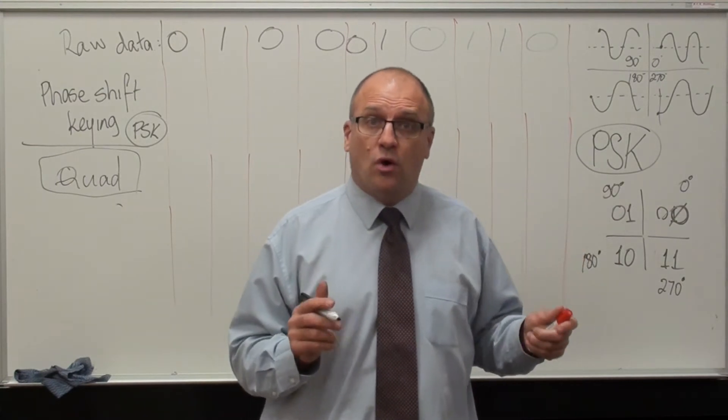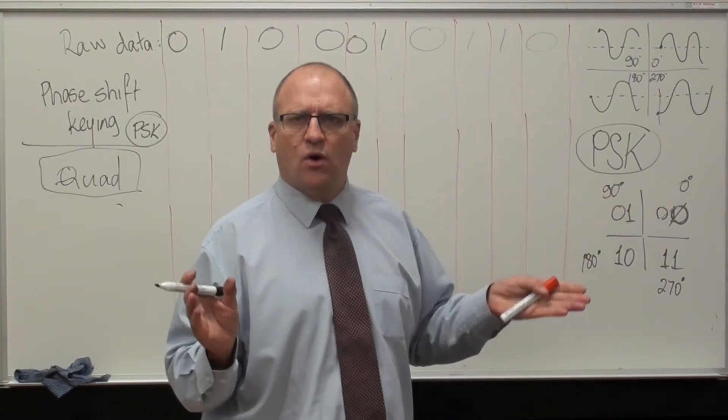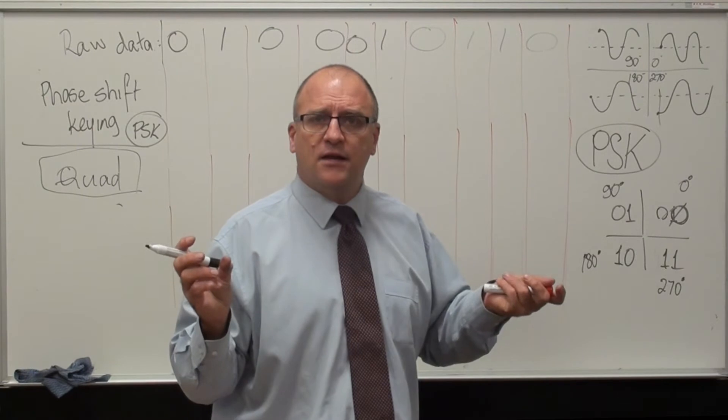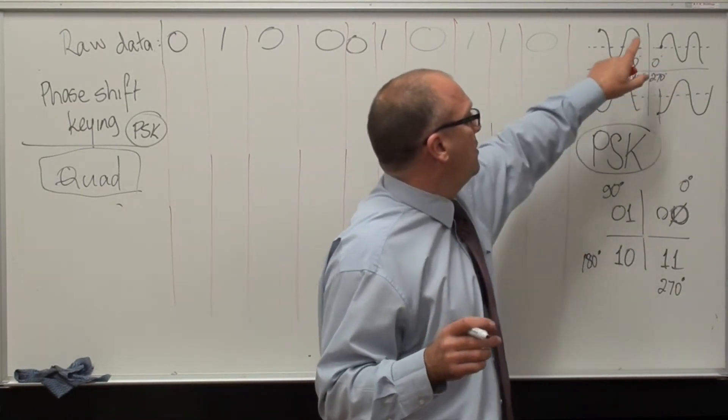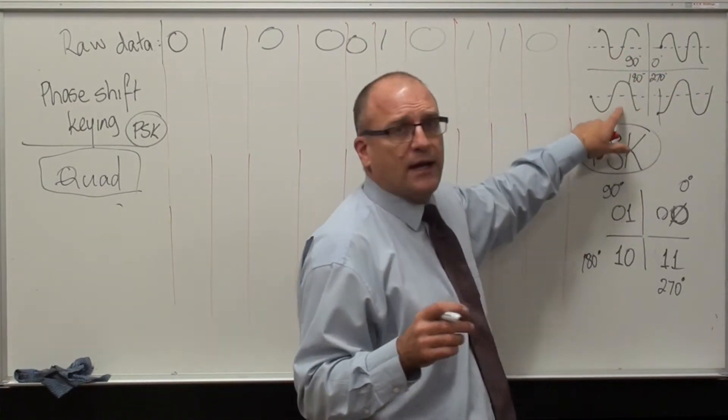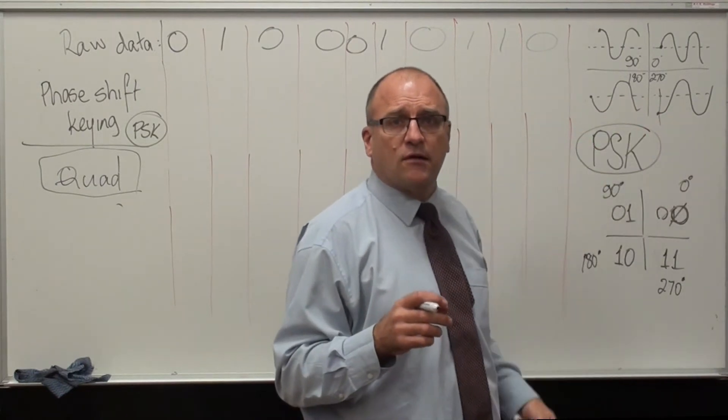Let's have a look at quadrature. Instead of having on or off, or 0 or 180 degrees, we use 0, 90, 180, 270 degrees.